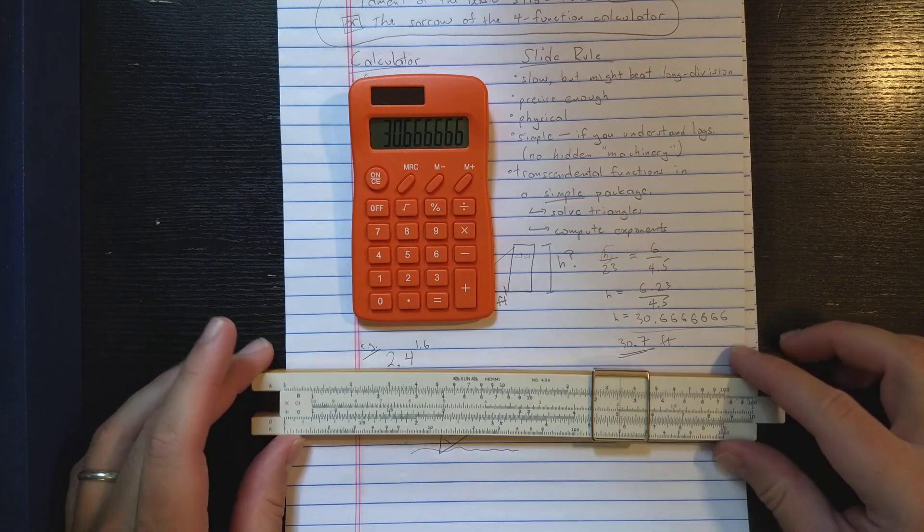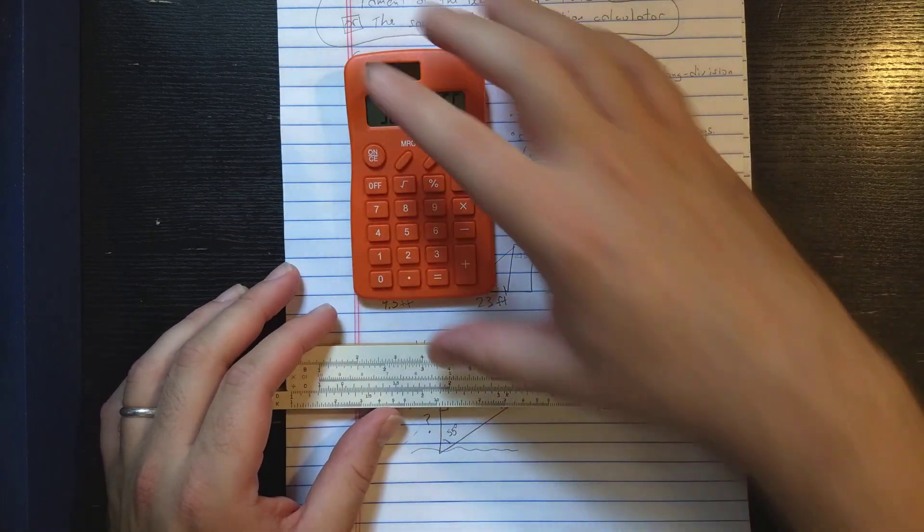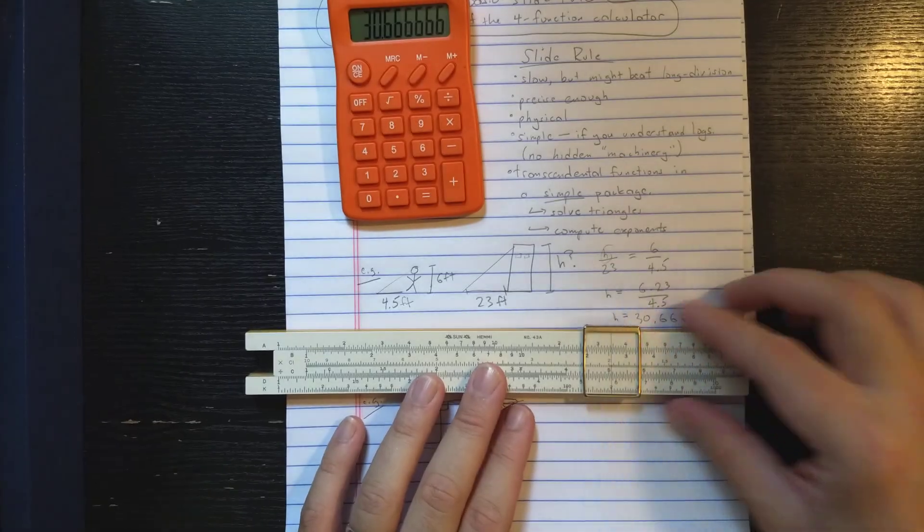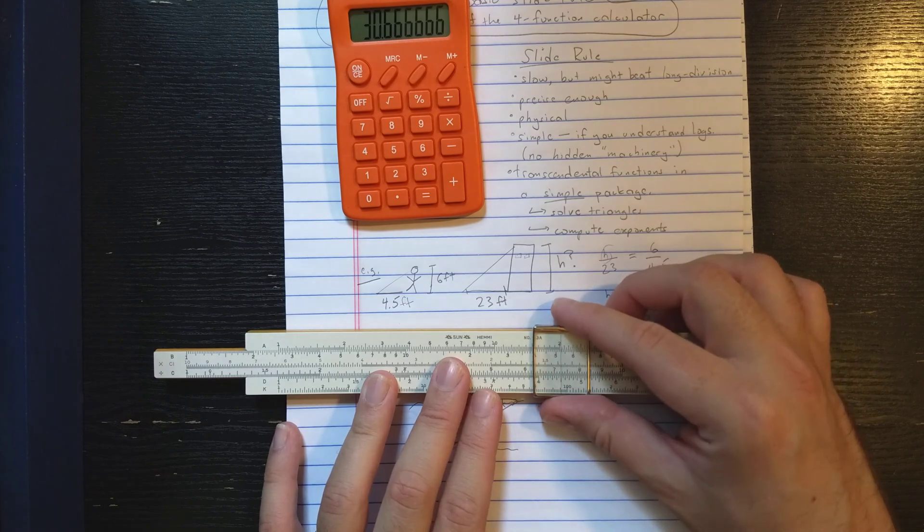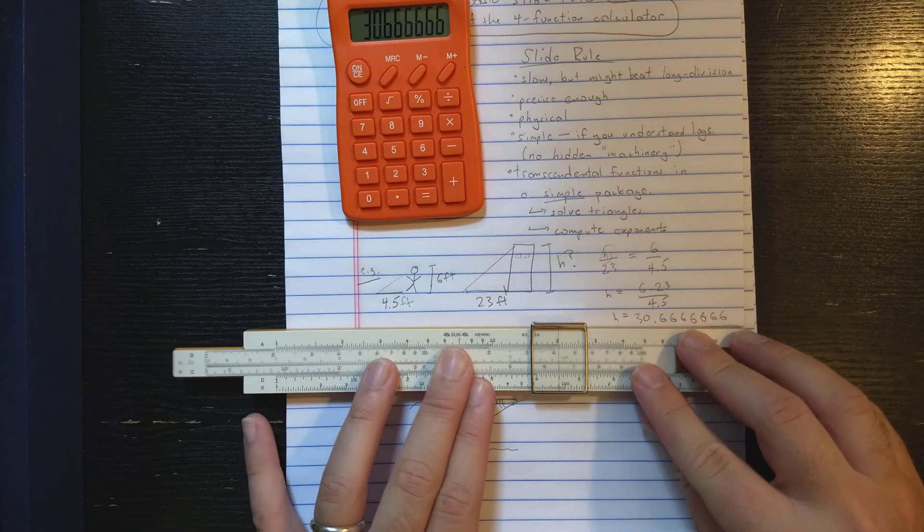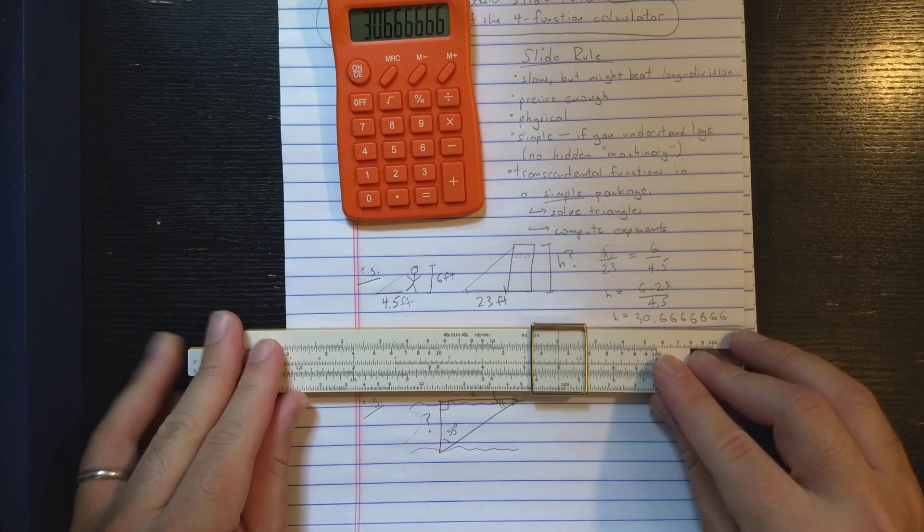On the slide rule, this is a fairly elegant calculation. I can literally set this proportion on the slide rule. I can set the 6 on the C scale over the 4.5 on the D scale. So here's the 4.5. Let's put the 6 over it.